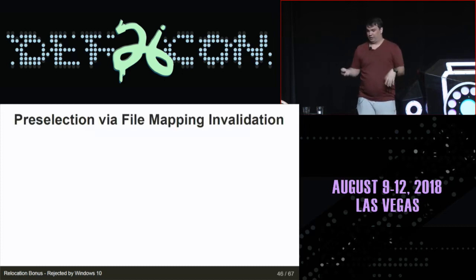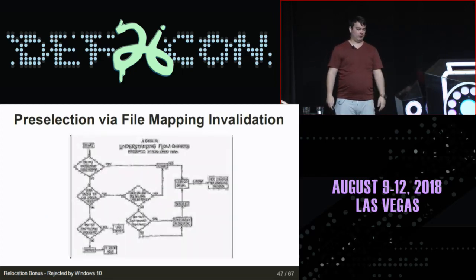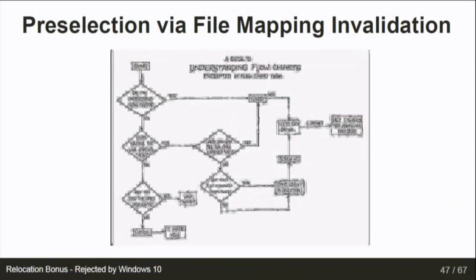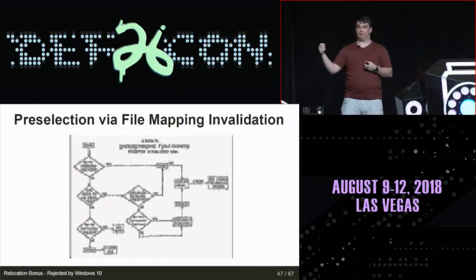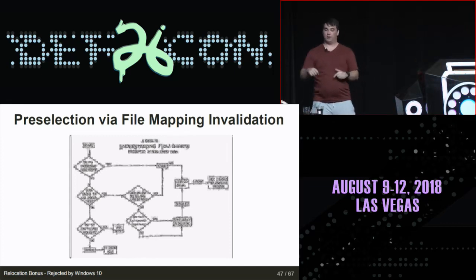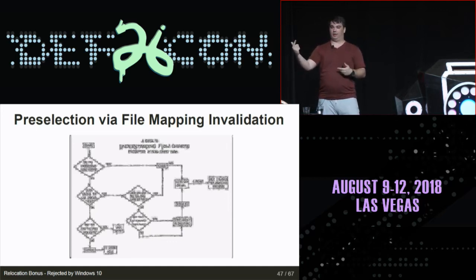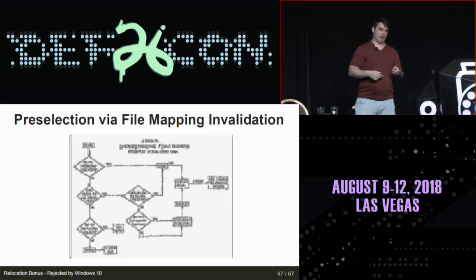Here's how the brute force works: if you memory-map a file, close the mapping, and launch the file, it will load at a different base address than before. So in a loop: launch the file, check the base address; if it's not what you want, memory-map the file, close the mapping, launch again. You keep getting a new base address and can pre-select whatever base you want.